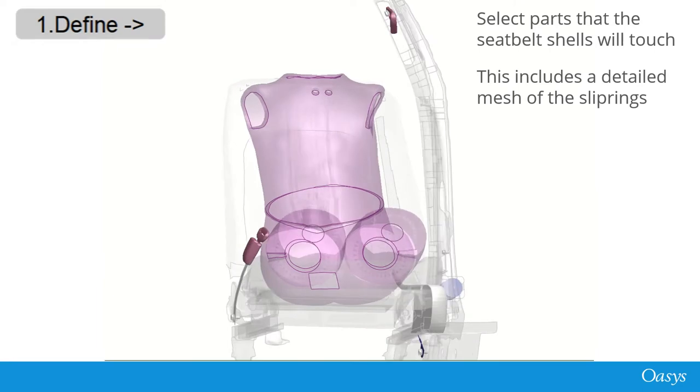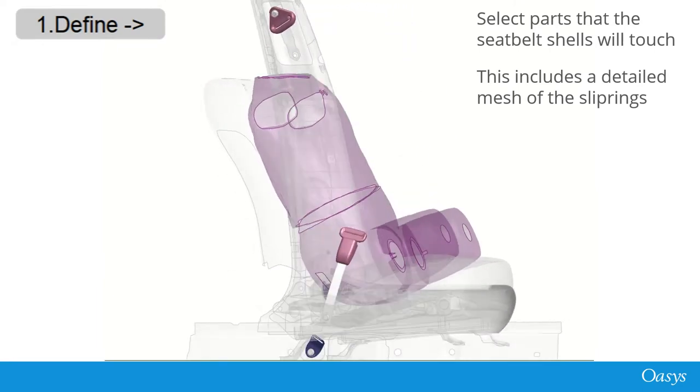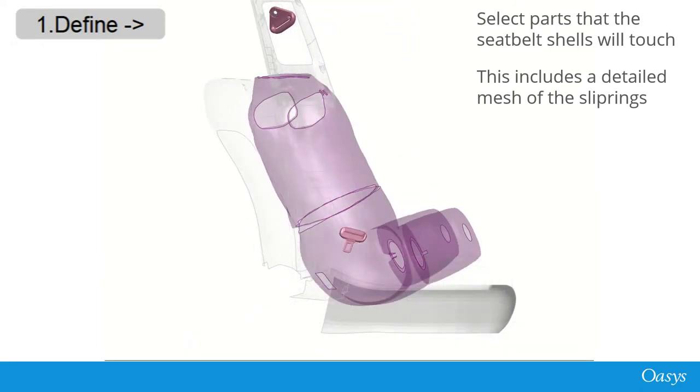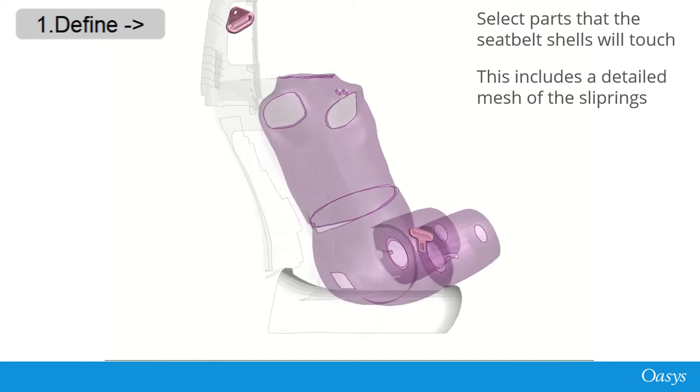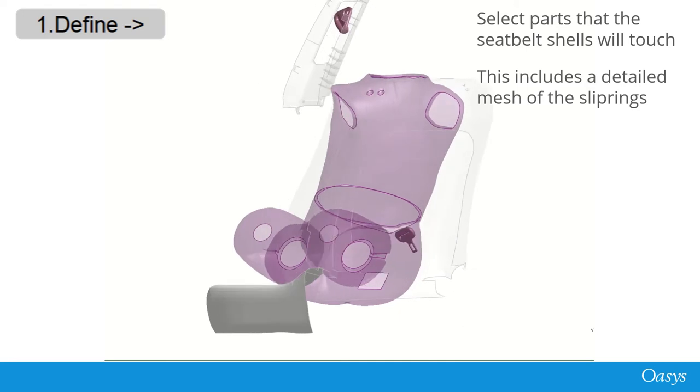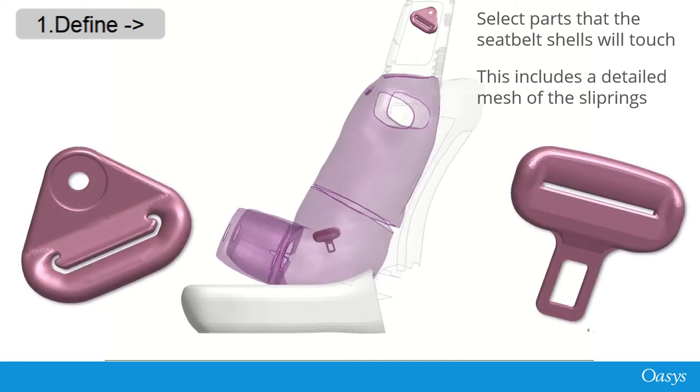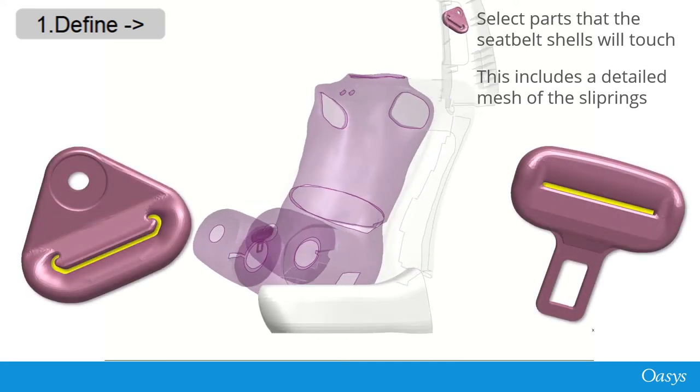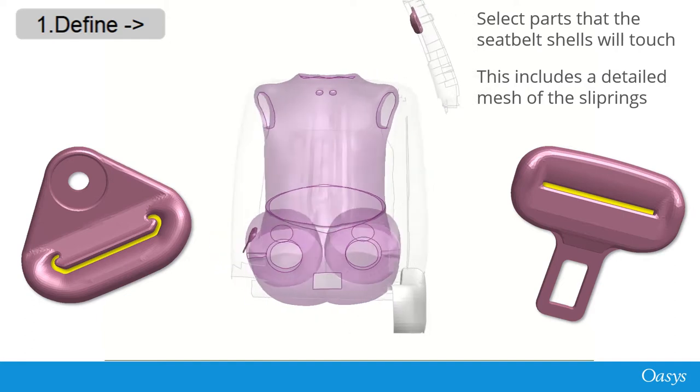The process to fit a seatbelt in Primer hasn't changed. First, we select the parts in the model that the seatbelt will touch during the fitting process. Now, though, we can include finely meshed models of the slip rings, as the belt will pass through these slots.